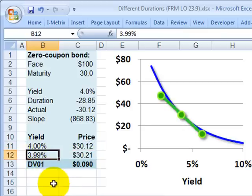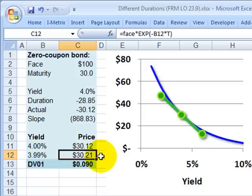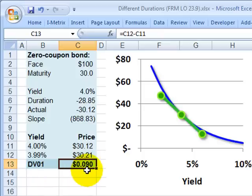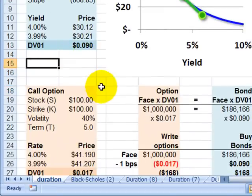Now, if we shock the yield down by one basis point, we only go from 4% to 3.99%. The price of the bond, as you expect, goes up. That's the classic idea of yield goes down, price goes up. In this case, the price goes up by $0.09. That is the dollar value of the zero. We shock the yield by one basis point, and the price goes up by 9 pennies. That's the dollar value of the zero.